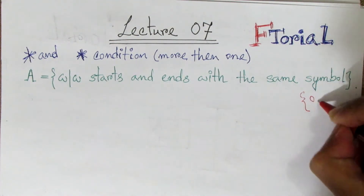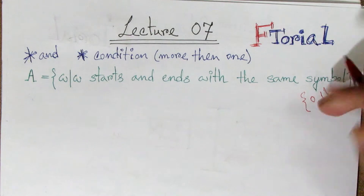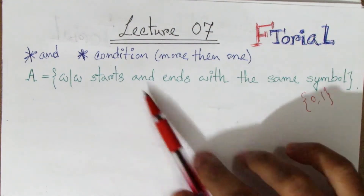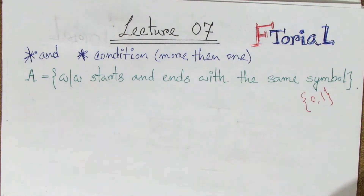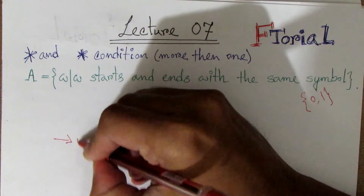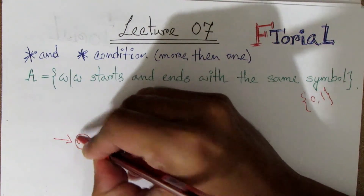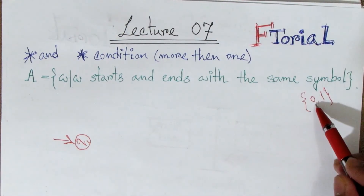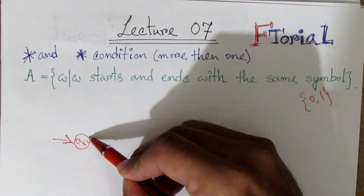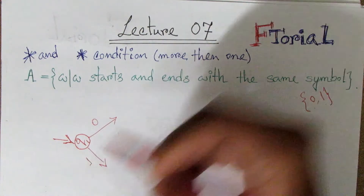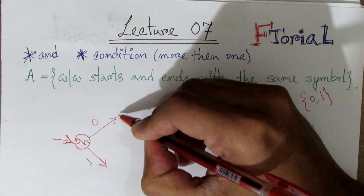Input 0 is 1. The start state is Q1. The input is 0 and 1. When the input is 0, we go to Q2.